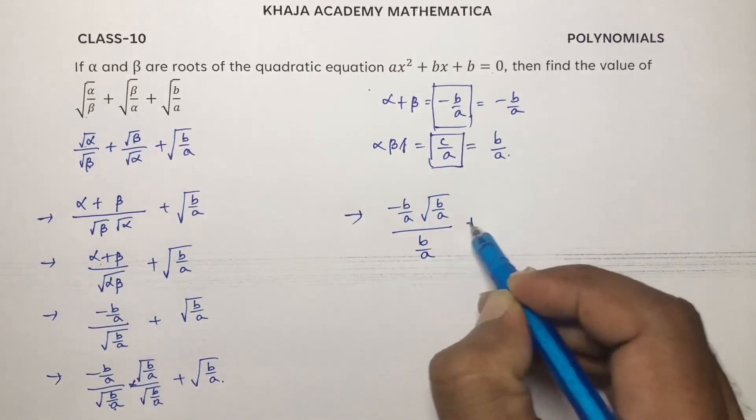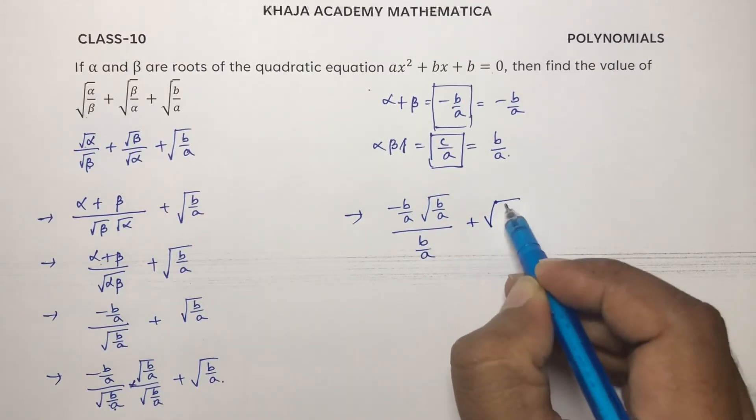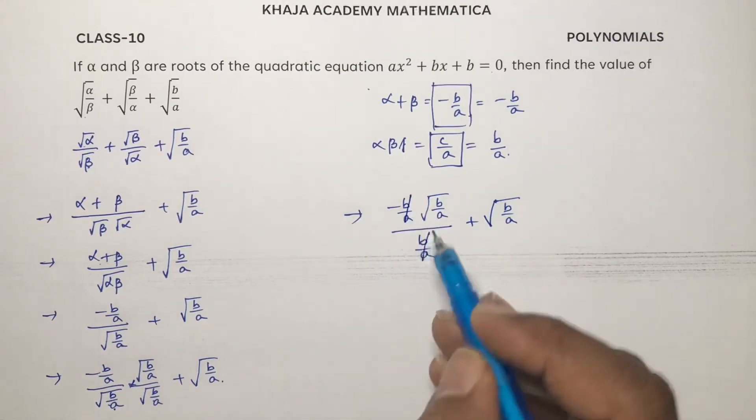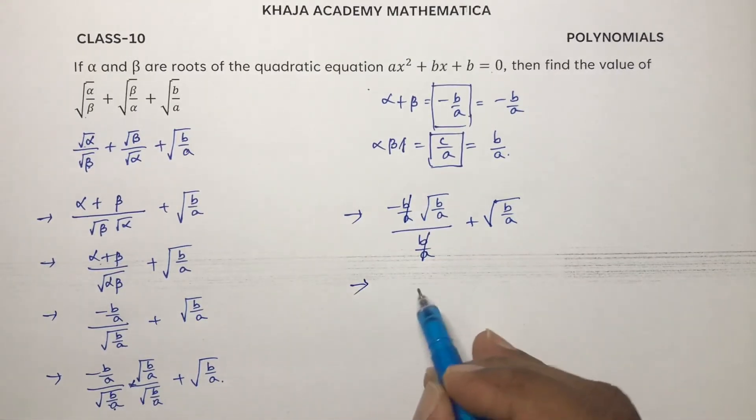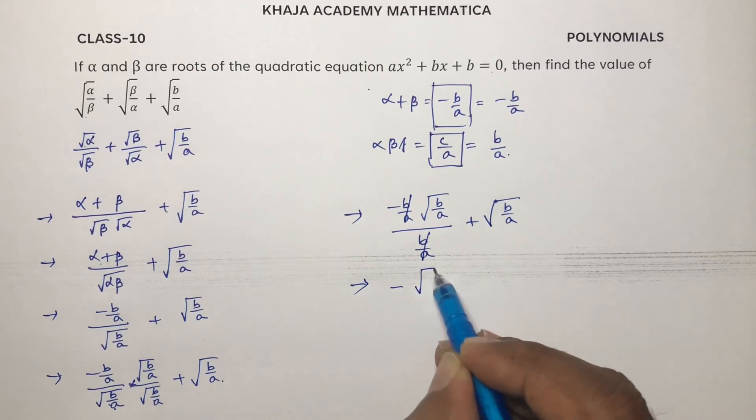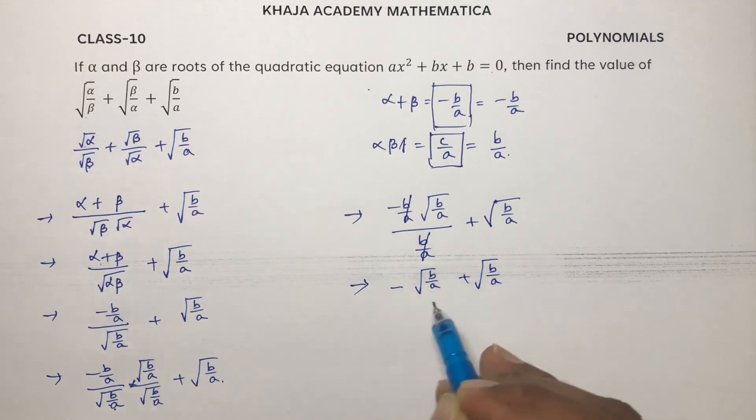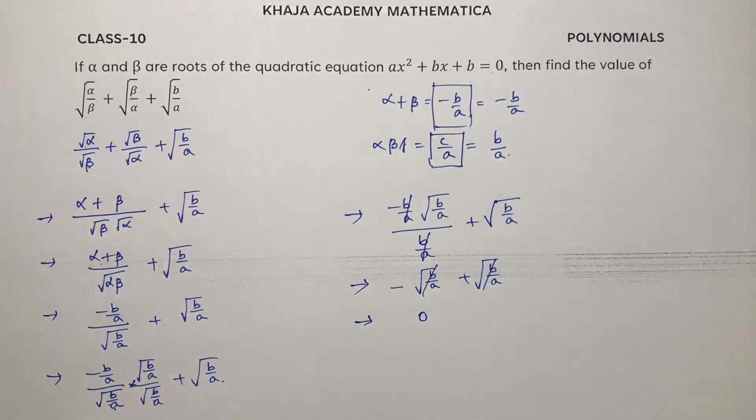You'll be left with b by a plus under root b by a. Here b by a upon b by a will get cancelled. So minus under root b upon a plus under root b upon a. Both will get cancelled because minus plus, so the answer is zero.